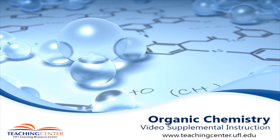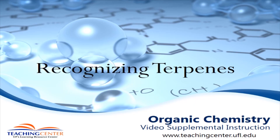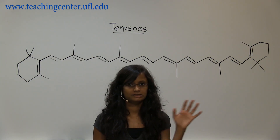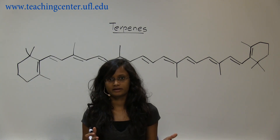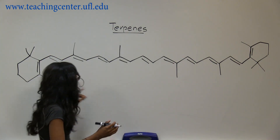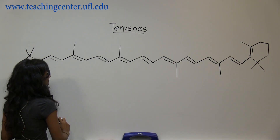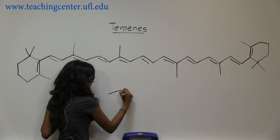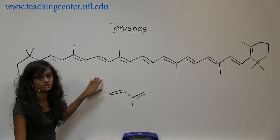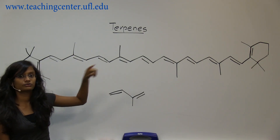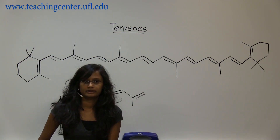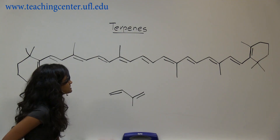Terpenes have a biological application — you see them in a lot of plants and we make a lot of stuff from them. Terpenes are molecules made up of isoprene units. An example is beta-carotene, where a bunch of isoprene units combine together to make a large structure. They are known for conjugation, which is important for our ability to see colors.